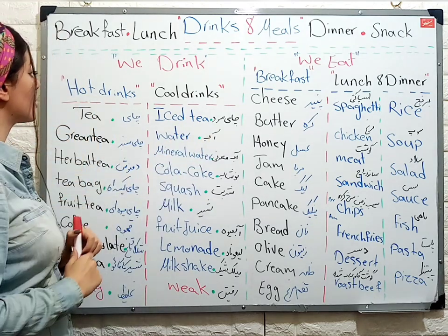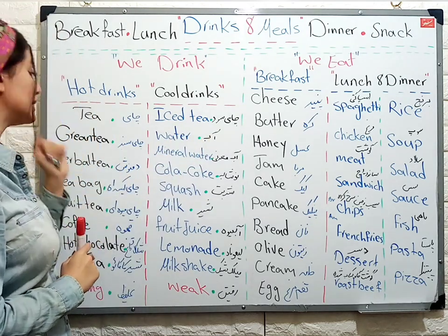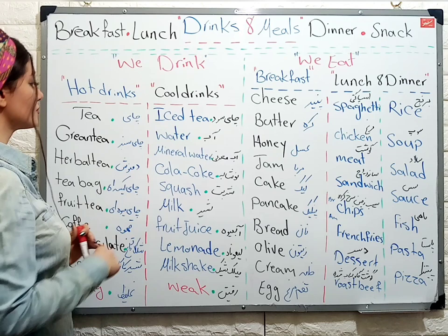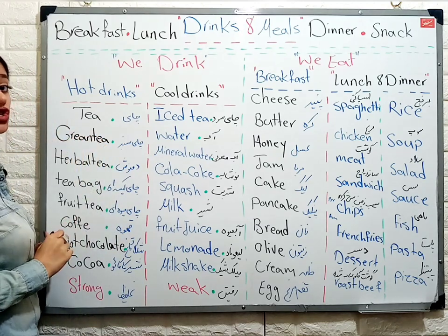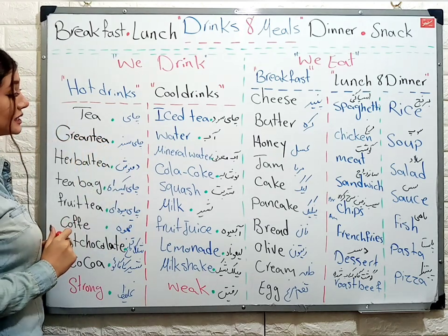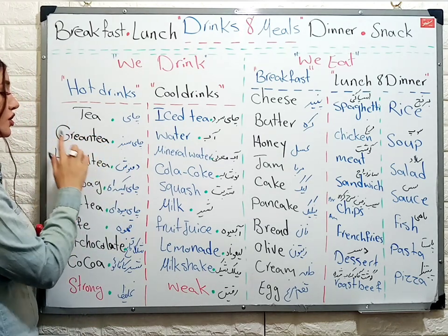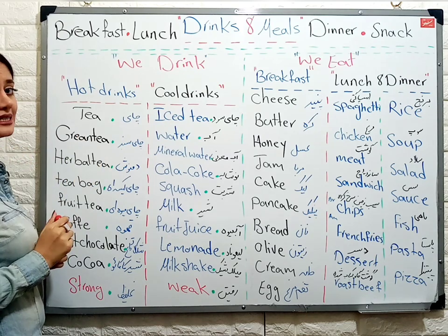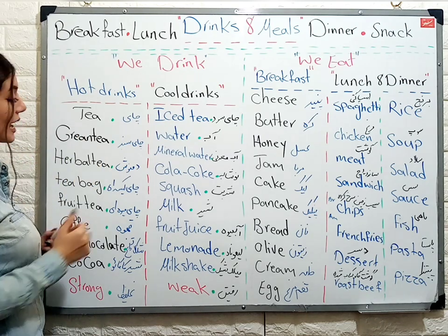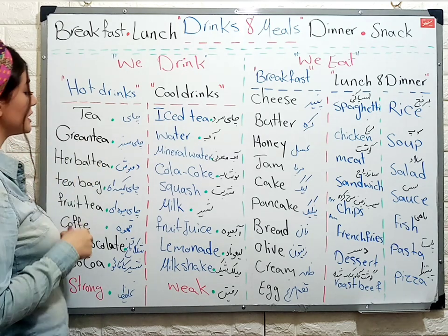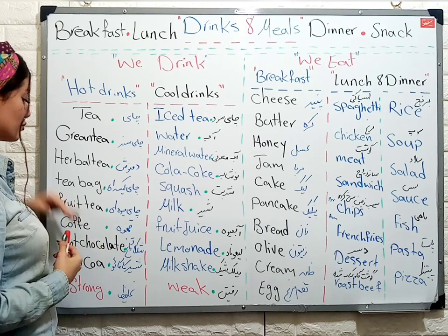Let's start from hot drinks. Tea — tea means چای. Green tea — چای سبز.